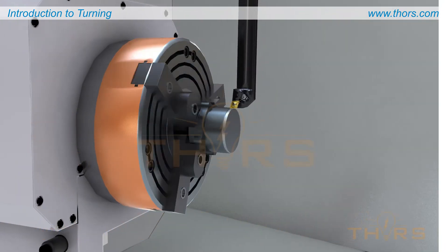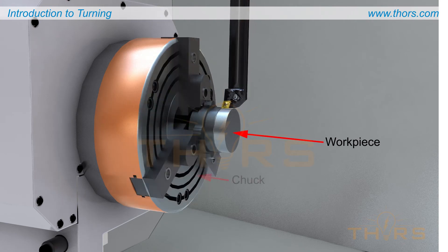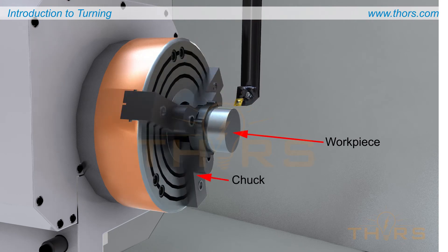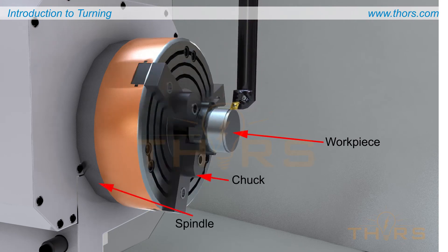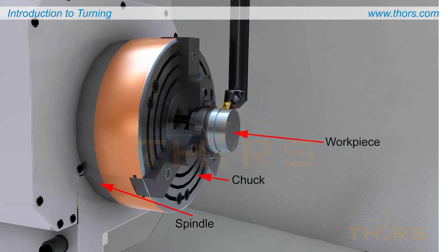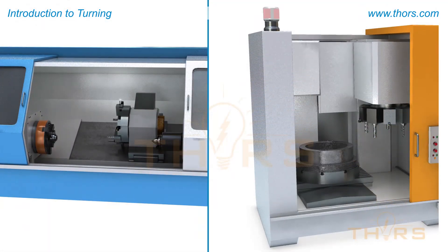In turning operations, a workpiece is held in a device called a chuck or collet, which rotates on a spindle. The spindle can be oriented vertically or horizontally, depending on the size and shape of the part.